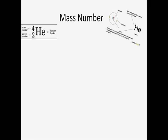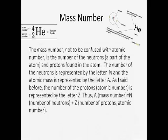The mass number. The mass number, not to be confused with the atomic number, is the number of the neutrons, a part of the atom, and protons found in the atom. The number of the neutrons is represented by the letter N, and the atomic mass is represented by the letter A. As I said before, the number of the protons is represented by the letter Z. Thus,